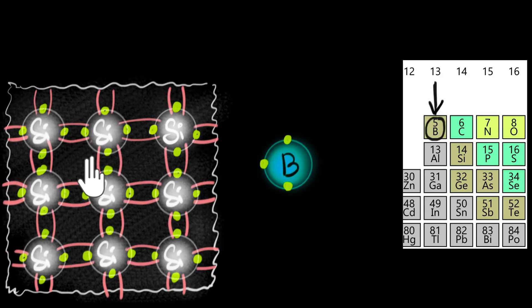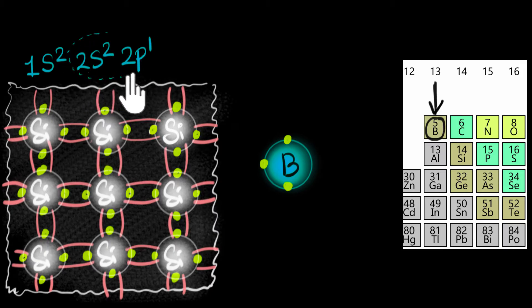Let's add boron to the party. If you write the electronic configuration of boron, you will see that it has three valence electrons. Since boron has five electrons, its electronic configuration would be 1s² 2s² 2p¹. Notice that its valence electrons are just three.